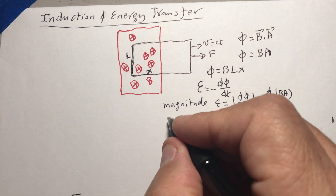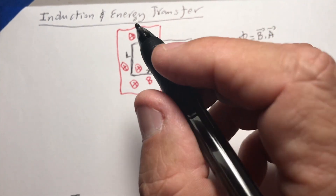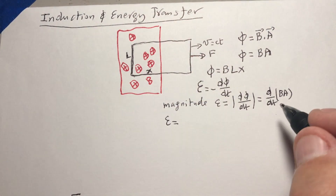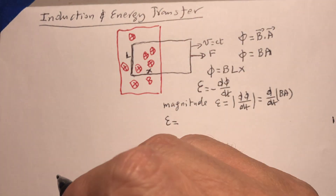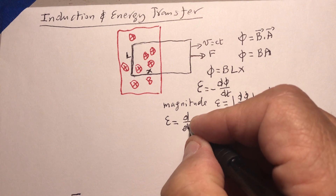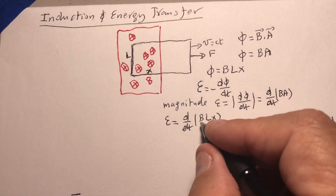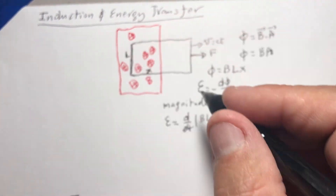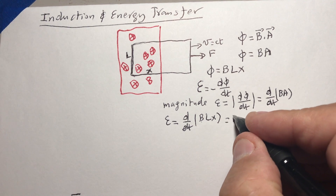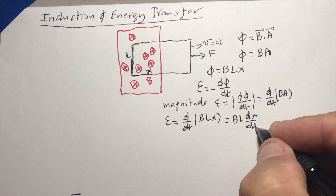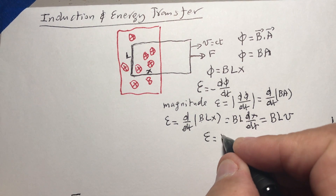The B field is not changing — it comes from a constant magnet — but the area changes as I move the loop to the right, getting smaller. So E = d/dt of (B·l·x). Since B and l are fixed, only x is variable, giving us B·l·(dx/dt). Since dx/dt is velocity, we get E = BLV.